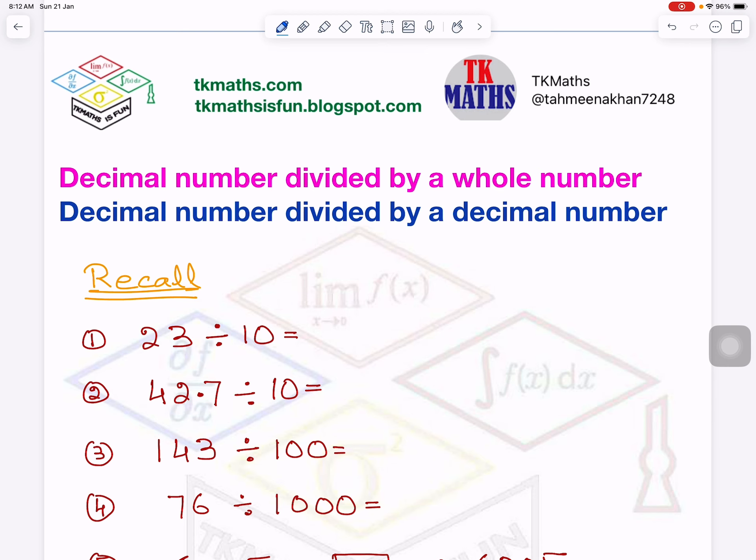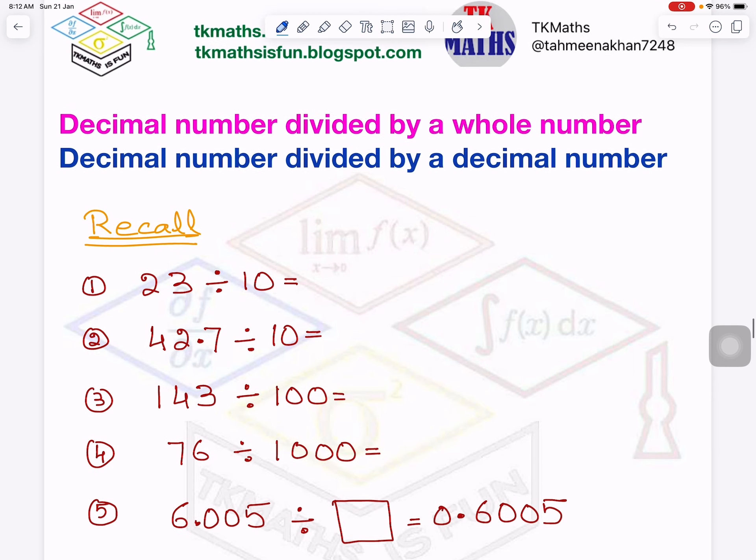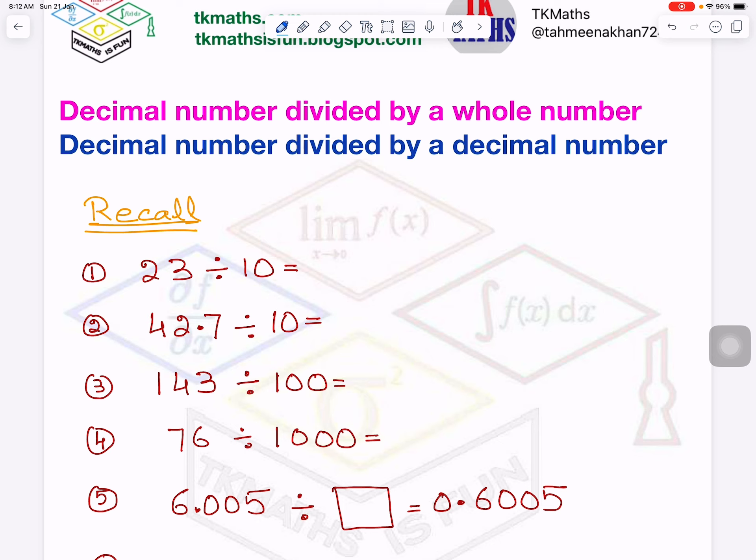So let's recall first of all, when you divide a number by 10, 100, 1000, then how number changes decimal numbers.